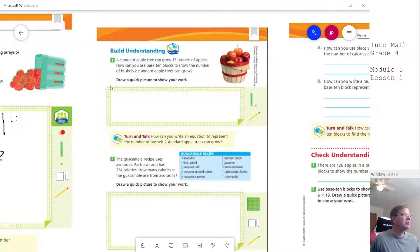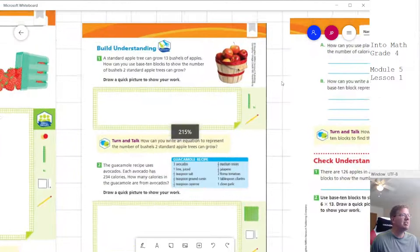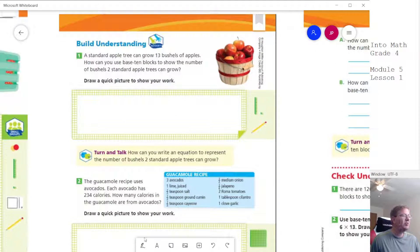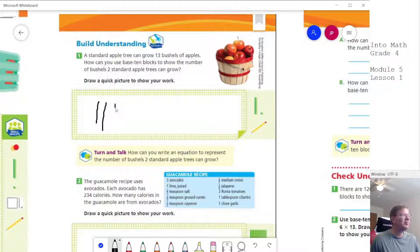Standard apple tree can grow 13 bushels. How can we use base ten blocks? So again, we're gonna do the same kind of deal here. We will do this with the base ten blocks in class to help. So we're gonna do three ones and two tens, and then three ones and two tens, and then we can add that together to get 26.